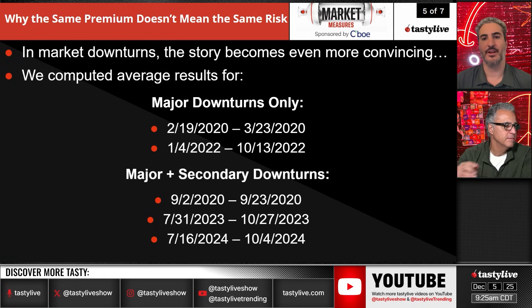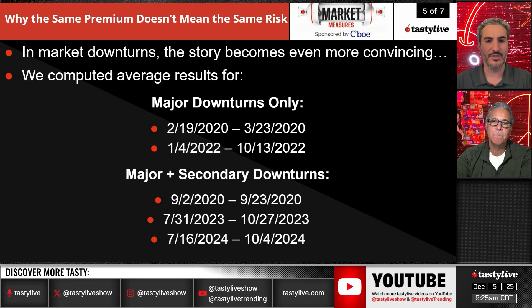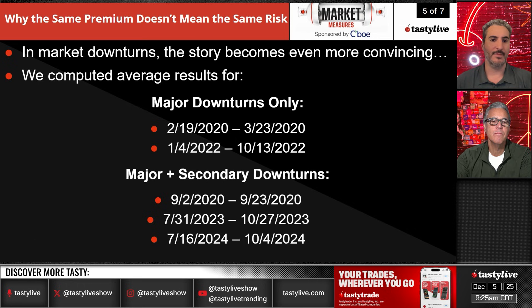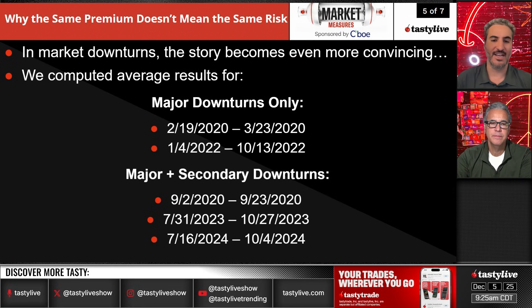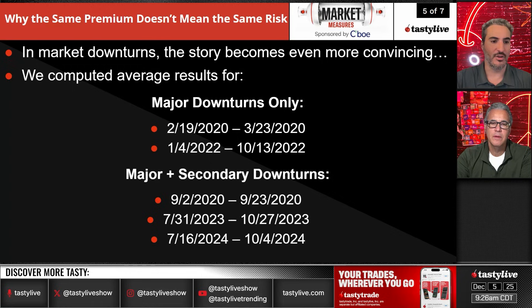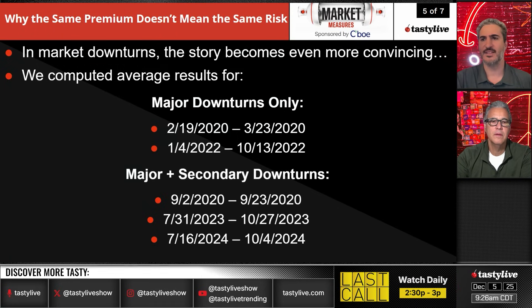In market downturns, the story becomes even more convincing. We computed the average results for major downturns: February to March of 2020 — the COVID craziness — and January to October of 2022, as well as the major and secondary drawdowns, which are some of the lesser moves to the downside throughout this five-year period.